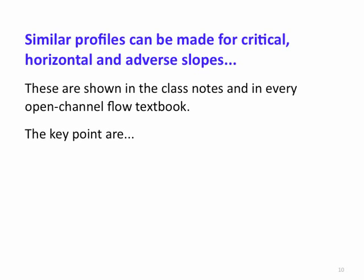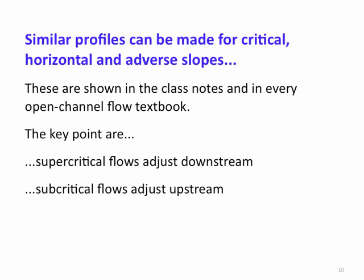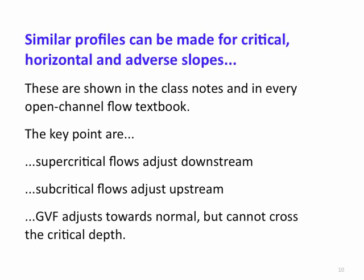The key points to emphasize are: supercritical flows always adjust downstream, whether you're on a steep slope or a mild slope. The question is not the slope — it's whether the flow has been perturbed into a supercritical regime or a subcritical regime. If the flow is subcritical, the adjustment is upstream.